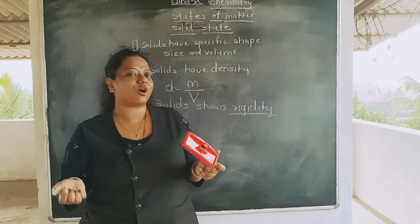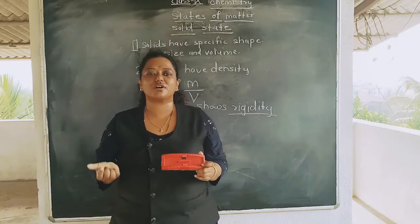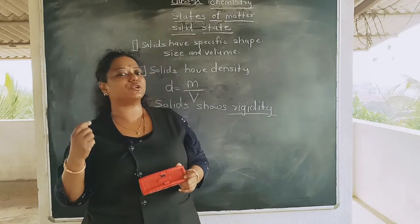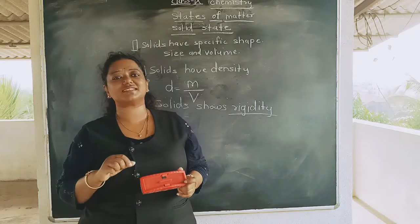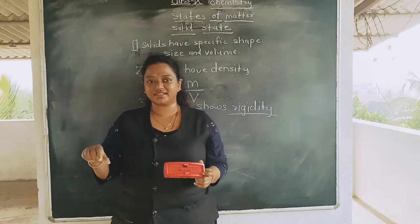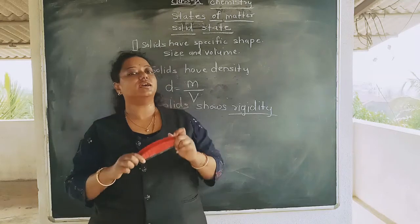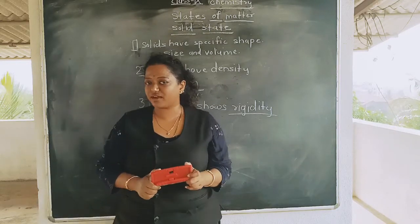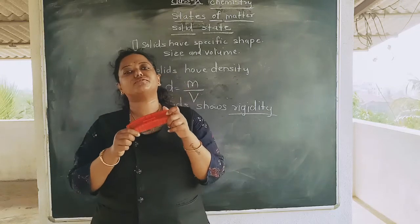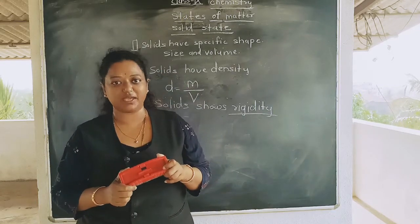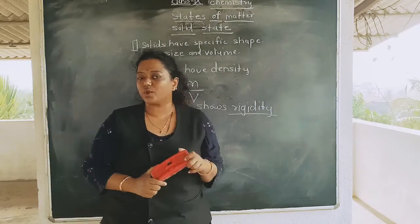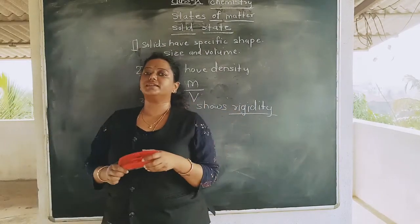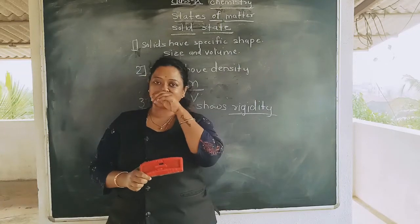Why are solids rigid? Because of the strong intermolecular force of attraction. This word is going to come up again and again. Intermolecular force of attraction is very, very strong in solids. So I hope you've understood the third property — solids show or possess rigidity.